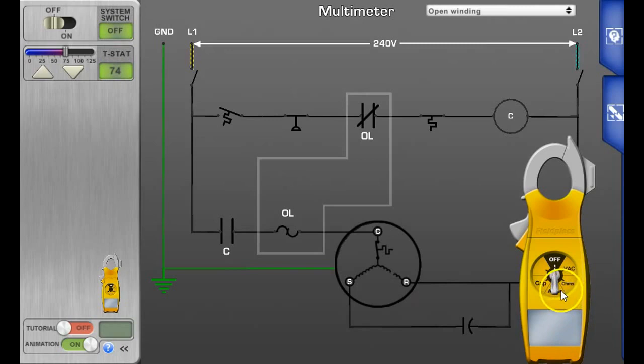This one has an open winding. We're going to put the meter to ohms and measure once again from common to run. That shows OL, which means overload.